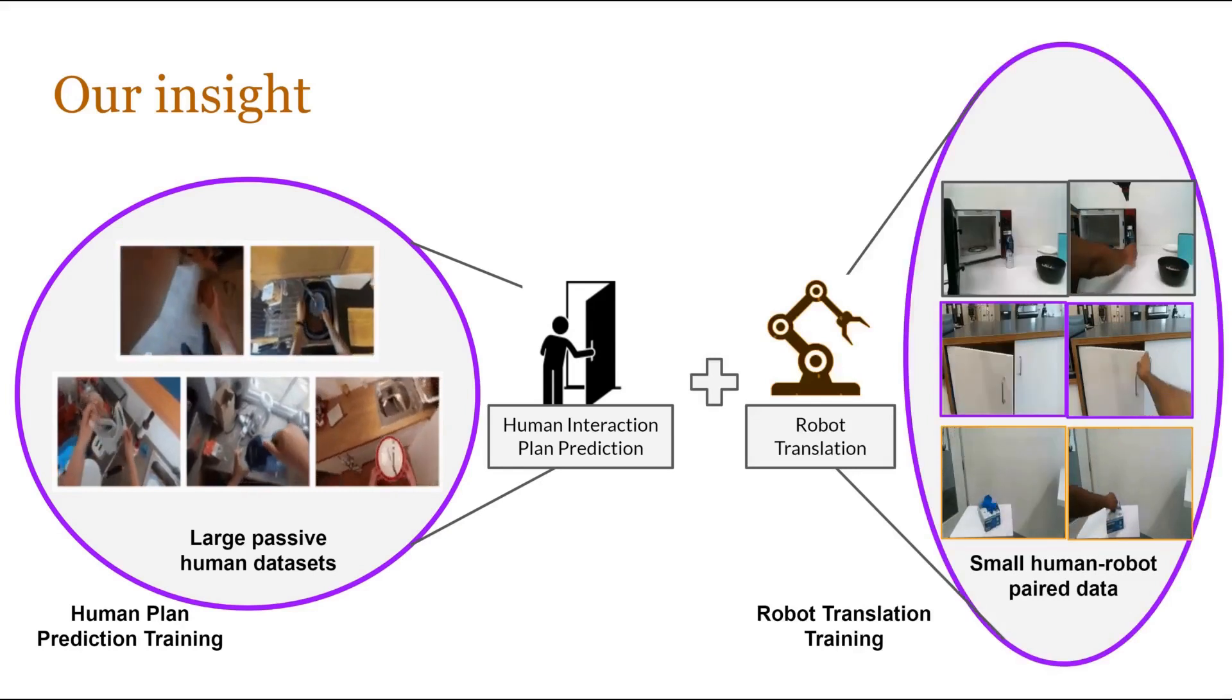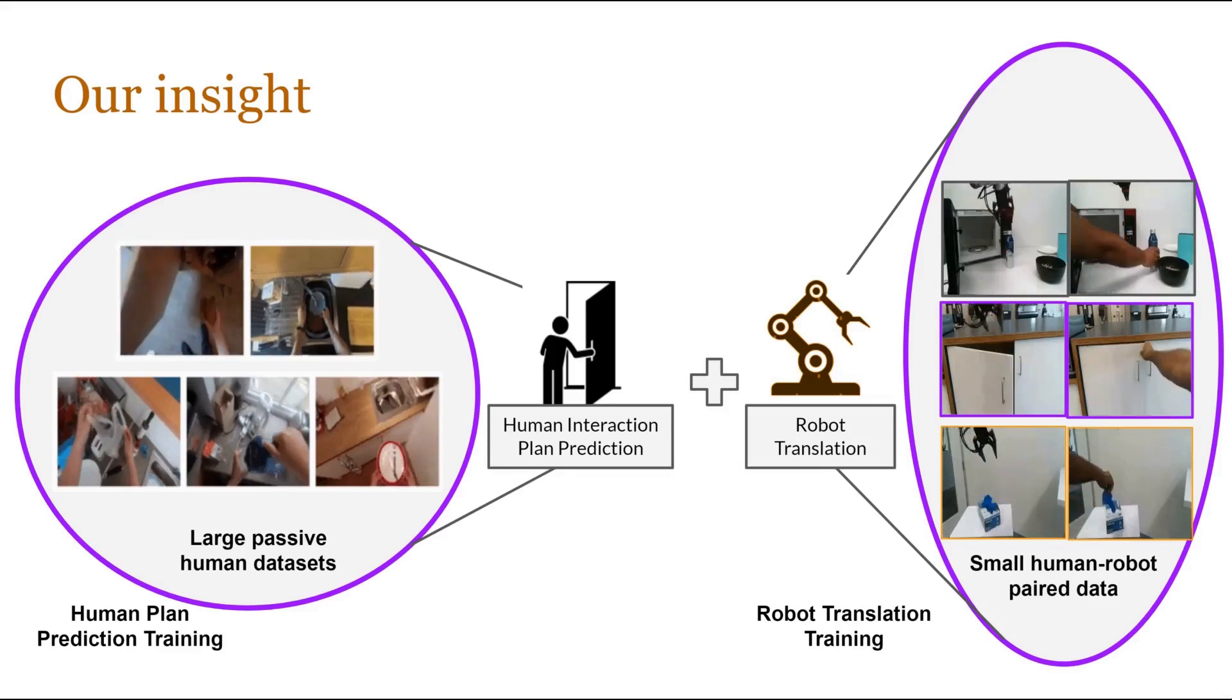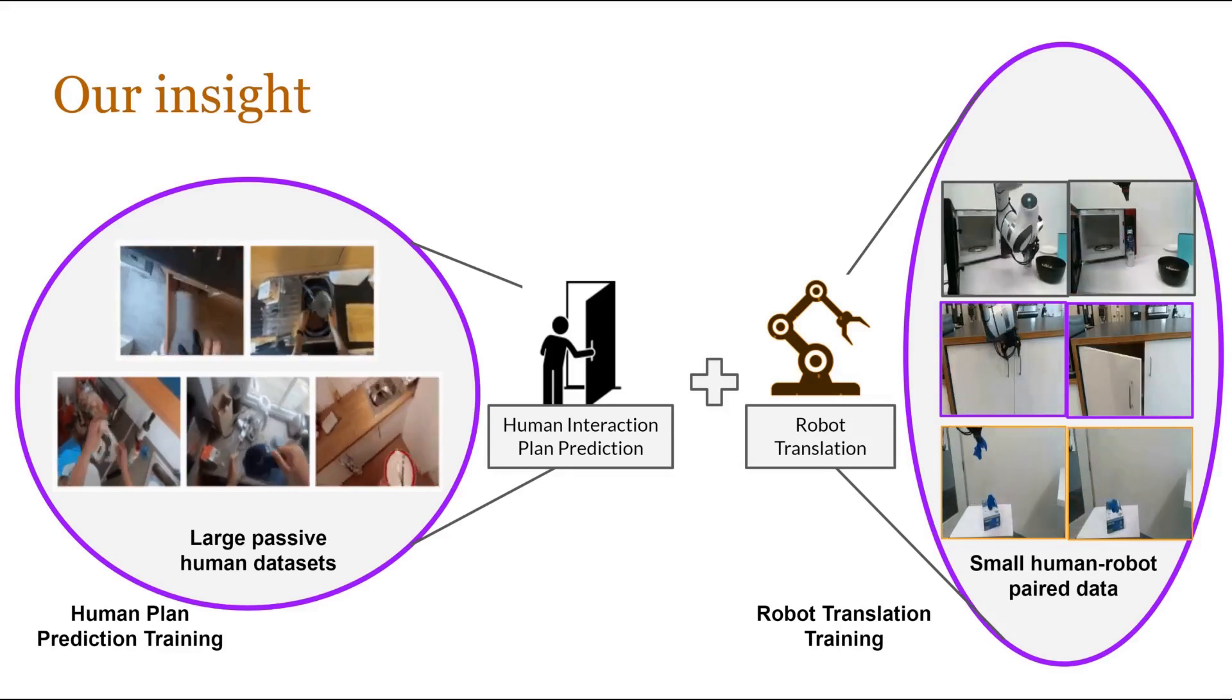Now to learn the robot translation model, we only need a very small amount of paired human-robot data in the order of a few hundred trajectories, which is very easy to collect through teleoperation.